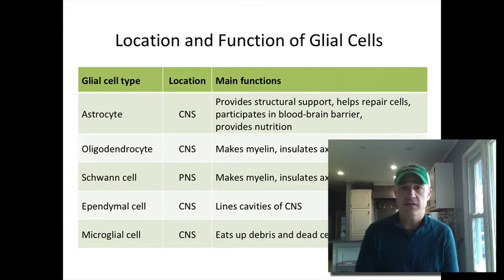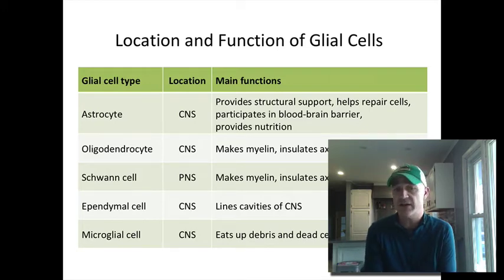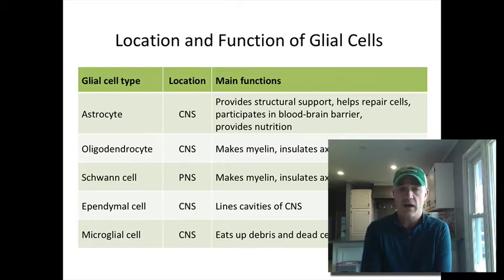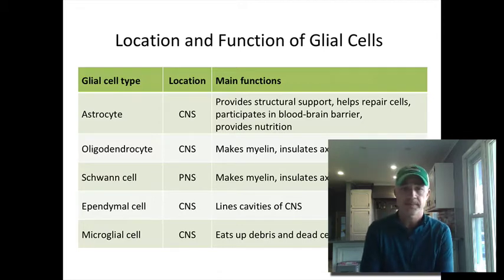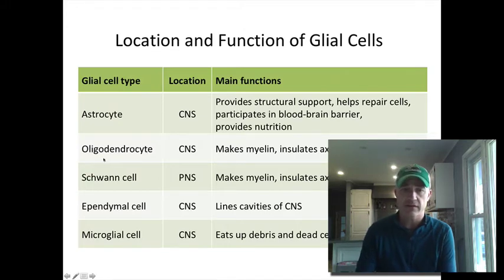Some of these are found specifically in the central nervous system: astrocytes, oligodendrocytes, ependymal cells, and microglial cells are all found only in the CNS. Schwann cells are peripheral nervous system only. Looking at this diagram, you can see that oligodendrocytes and Schwann cells do a similar thing.